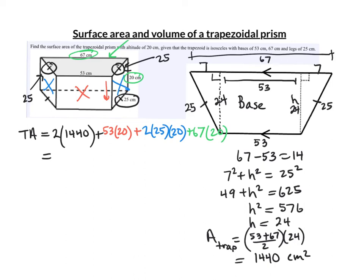This simplifies to 2,880 plus 1,060 plus 1,000 plus 1,340. We'll add all those together. And we get 6,280. And this is area, so it would be centimeters squared.